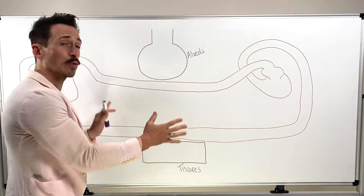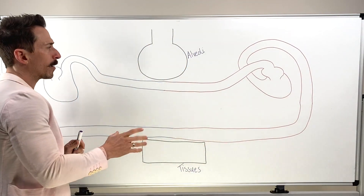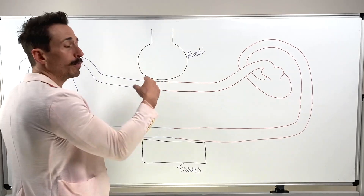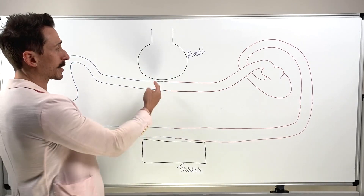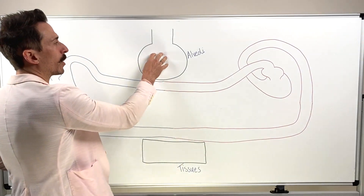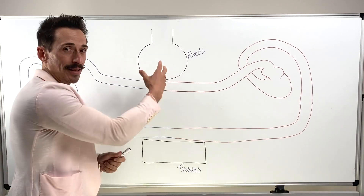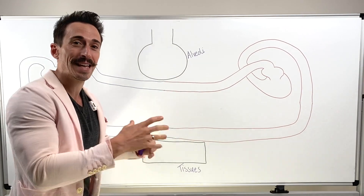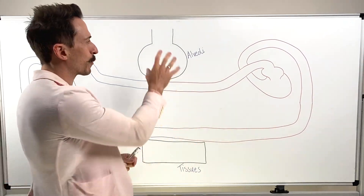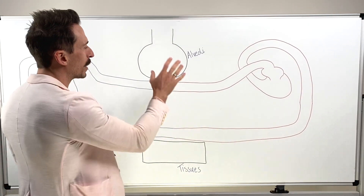To begin, I want to show you what I've drawn up on the board. I've drawn up our alveoli. Now you may say this looks like a single alveolus — this alveolus represents every alveoli in our lungs, so it's representative of all the alveoli.